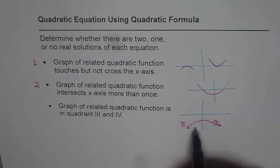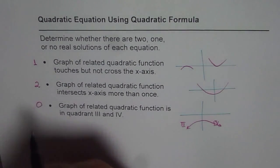And if the graph is going from quadrant three to four, in that case it is not crossing the x-axis at all. So graph is only in quadrant three and four. In that case we have zero real solutions.